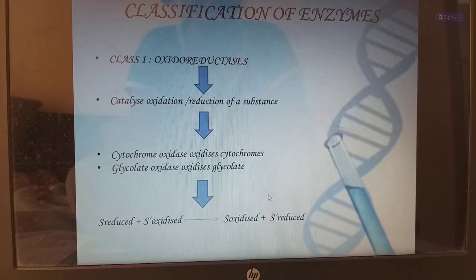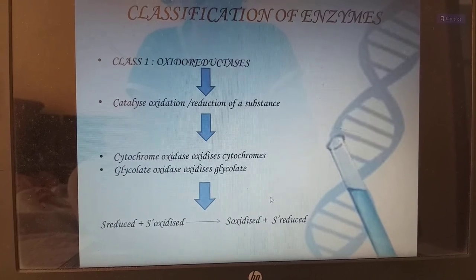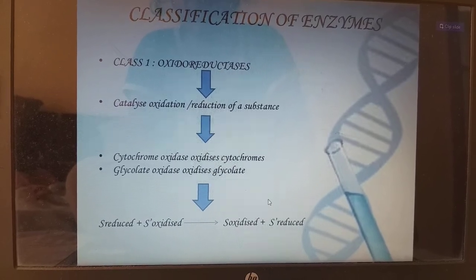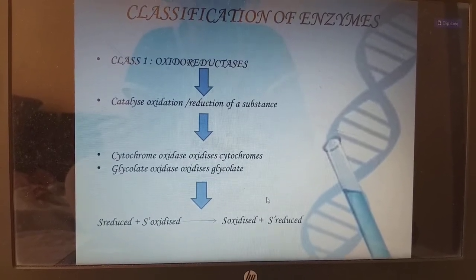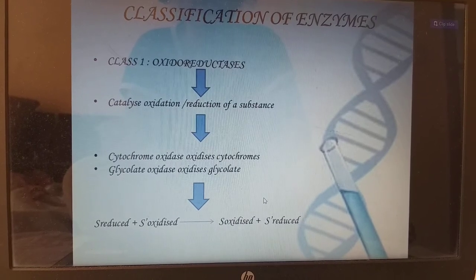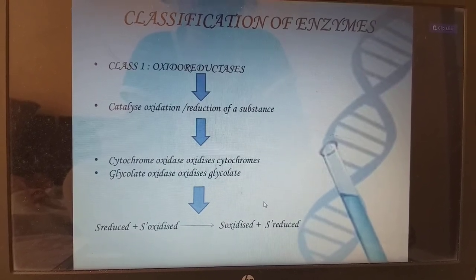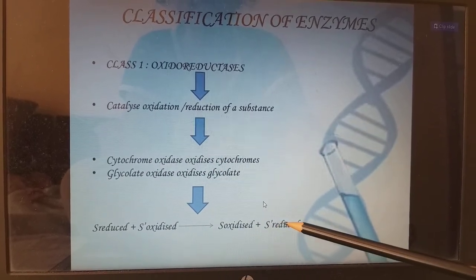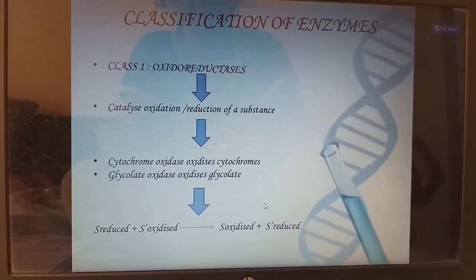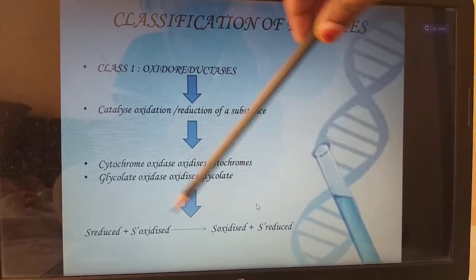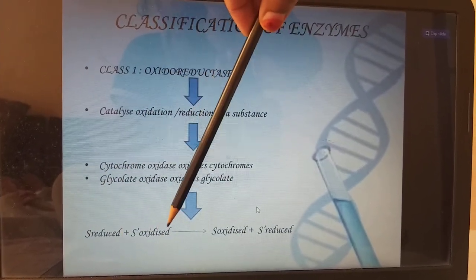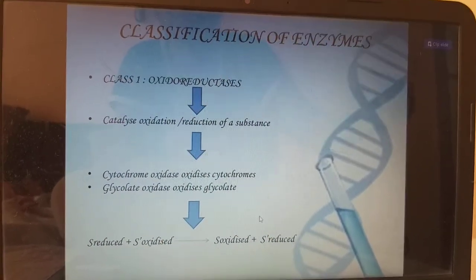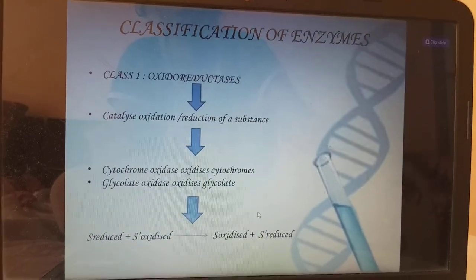Classification of enzymes: Class 1 — oxidoreductases, which catalyze the oxidation and reduction of substances, example cytochrome oxidase, glycolate oxidase. The reaction: substrate reduced plus substrate oxidized converts to substrate oxidized plus substrate reduced. Class 2 — transferases, which catalyze the transfer of specific groups from one substrate to another, example glutamate pyruvate transaminase. The reaction: Sg plus S converts to S plus Sg.